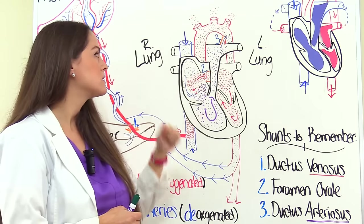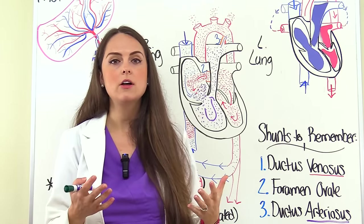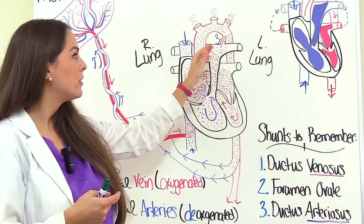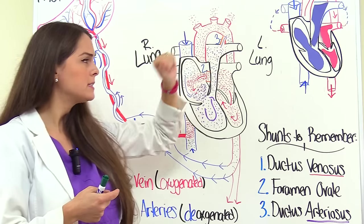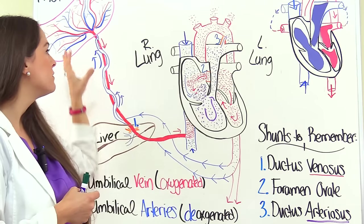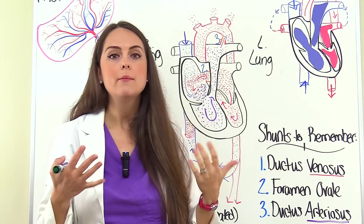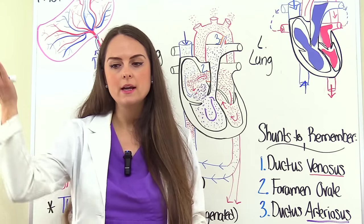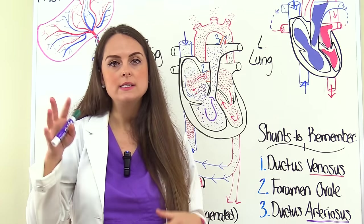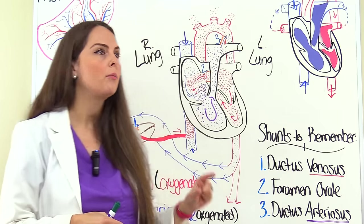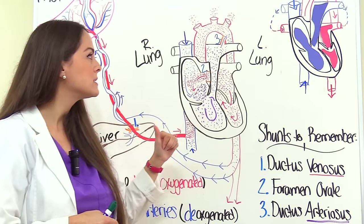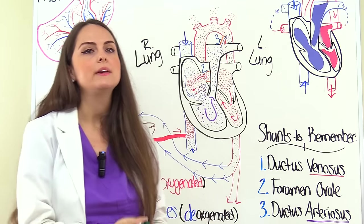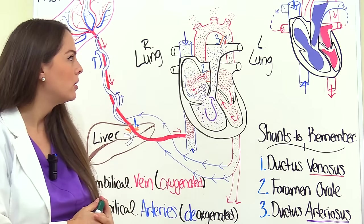The ductus arteriosus also closes due to pressure changes — you no longer have high pulmonary artery pressure allowing blood to flow up into the aorta. Additionally, we've removed the placenta, which produces prostaglandins, and this vessel is very sensitive to prostaglandins. Cutting the umbilical cord decreases prostaglandins, which helps close the ductus arteriosus. Plus the baby is now breathing on their own, oxygen levels are up, and so that structure is no longer needed and it seals off.